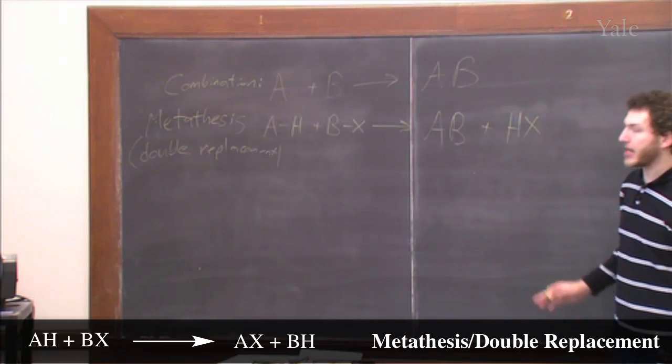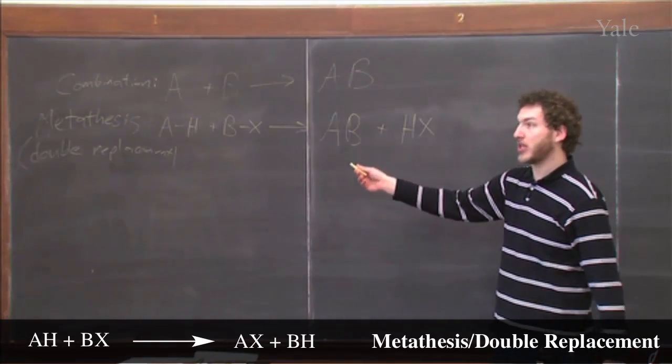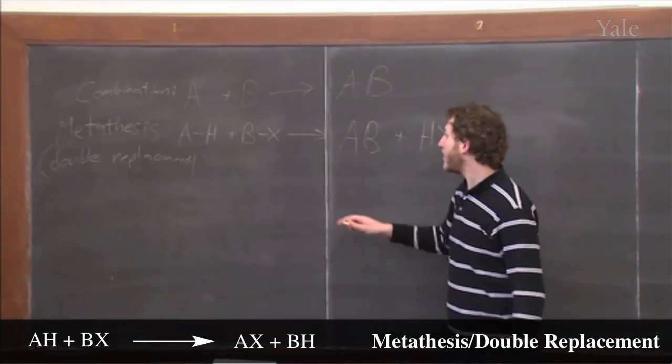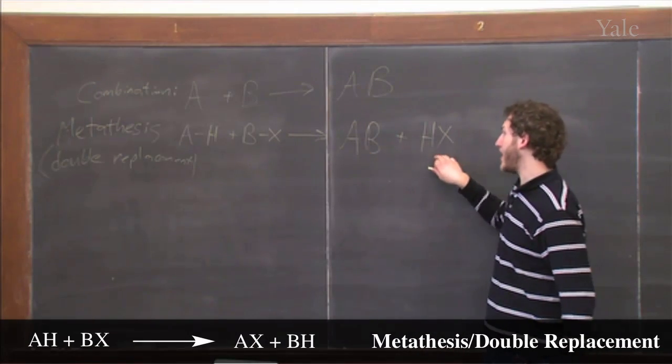Basically what's going on is you form AB plus HX. You can think of it as partners switching in reactions, why it's called a double replacement. So now instead of having A and H together and B and X together, you've swapped. You have A and B together and HX together.